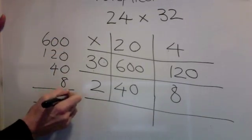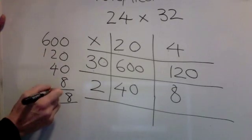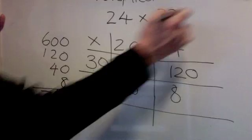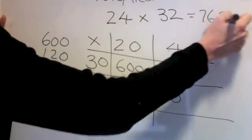8 add nothing, 8. 4, 5, 6. 6 and 1 is 7. 768.